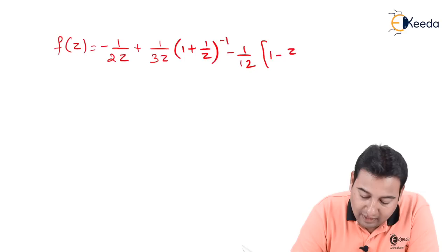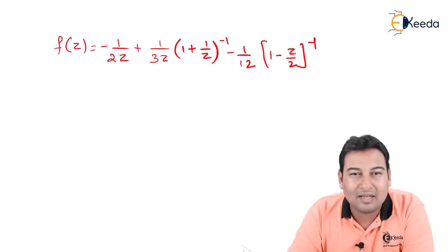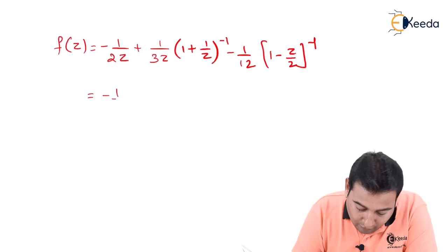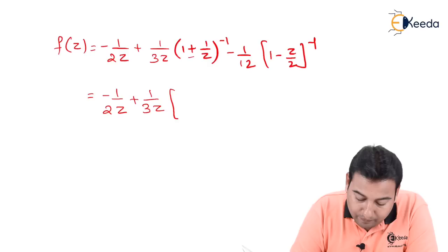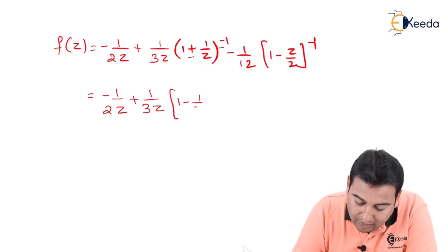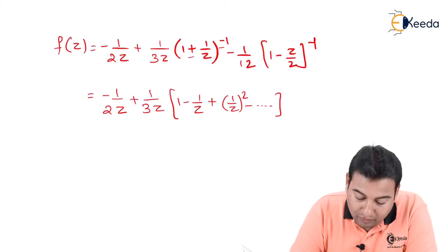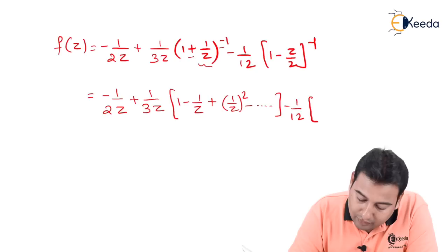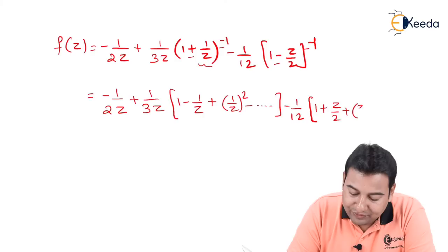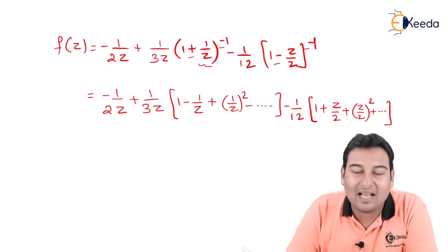Converting to inverse format: f(z) = -1/(2z) + (1/3z)(1+1/z)⁻¹ - (1/12)(1-z/2)⁻¹. Expanding: (1+1/z)⁻¹ = 1-1/z+(1/z)²-⋯ and (1-z/2)⁻¹ = 1+z/2+(z/2)²+⋯ So f(z) = -1/(2z) + (1/3z)(1-1/z+(1/z)²-⋯) - (1/12)(1+z/2+(z/2)²+⋯)